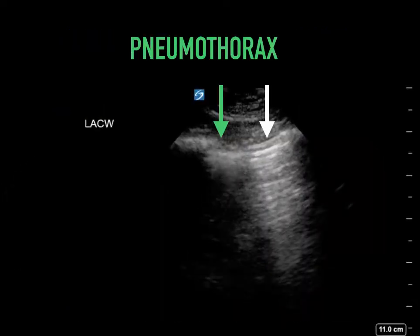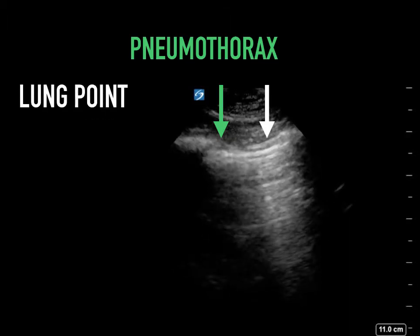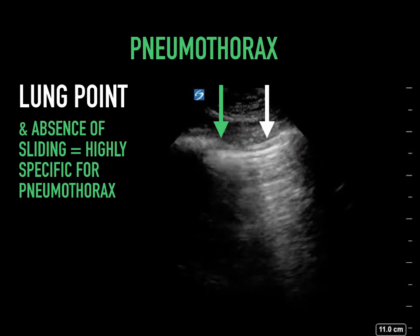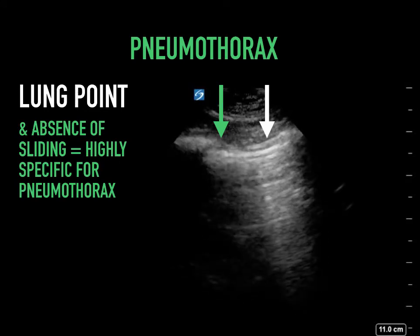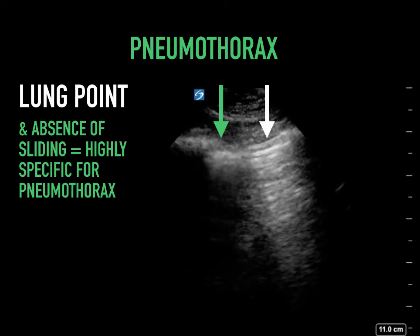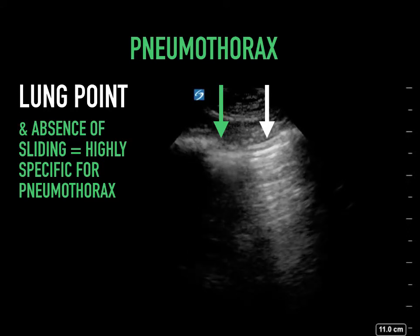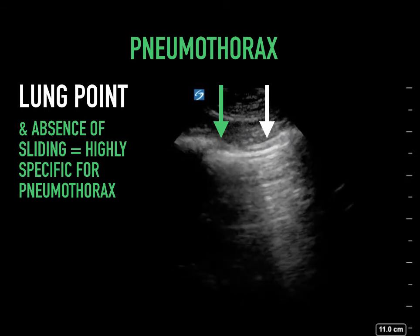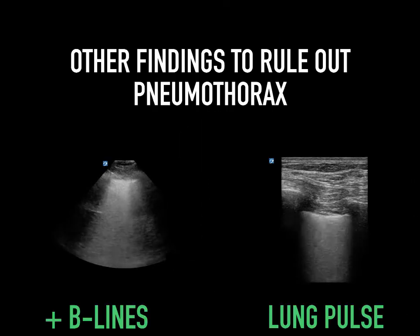This finding is particularly important — it's called a lung point. It demarcates an area between sliding (the green arrow) and no sliding (the white arrow). This is the exact point at which we see loss of pleural apposition — the transition point between no air between the pleura and air. This is highly specific for pneumothorax. Other findings to help rule out pneumothorax include B lines and lung pulse, where lung pulse reflects cardiac oscillations transmitted to the abutting pleura.